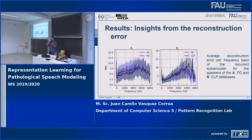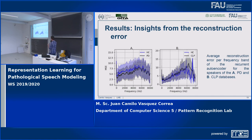Regarding the reconstruction error of the recurrent autoencoder, the difference between healthy controls and Parkinson's patients is even larger. We observe the same effect: the reconstruction error for patients is lower than for healthy controls in Parkinson's disease. For patients with cleft lip and palate, we observe that in the higher part of the spectrum — around where the sibilant fricatives appear — the reconstruction error is lower for healthy controls compared to the patients.